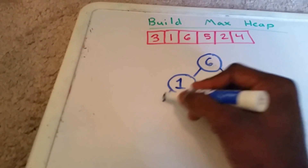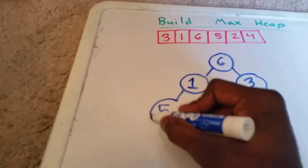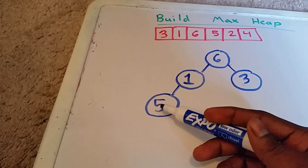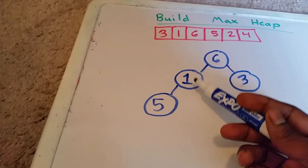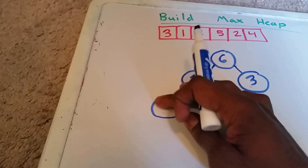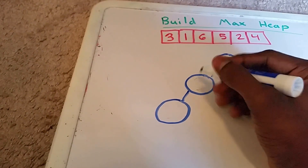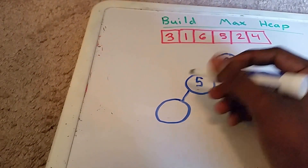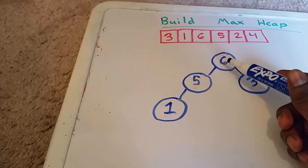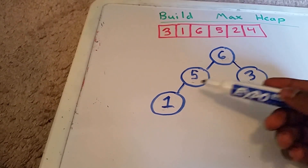So next we have 5. Going top to bottom, left to right. We check: is 5 less than or equal to its parent, which is 1? It's not, so we have to switch the 5 and the 1. So 5 goes here and 1 goes here. And now we have to check the same thing: is 5 less than or equal to its parent, which is 6? Yes it is, so we're good there — no swap.